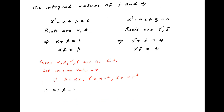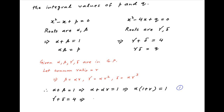Using this in the result alpha plus beta equals 1, we get alpha plus alpha r equals 1, which implies alpha times (1 plus r) equals 1. Let's call this result 1. Similarly, the equation gamma plus delta equals 4 becomes alpha r squared plus alpha r cubed equals 4, which implies alpha r squared times (1 plus r) equals 4. Let's call this result 2.